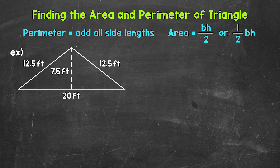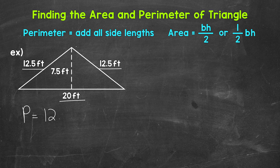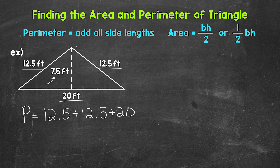Here is our second example. Let's start by finding the perimeter. Perimeter equals the sum of all side lengths — we have 12.5 feet here, 12.5 feet here, and 20 feet. Keep in mind, we do not need the 7.5 feet shown — that's the height we'll use for the area, not a side length. So 12.5 plus 12.5 gives us 25, plus 20 gives us a perimeter of 45 feet.